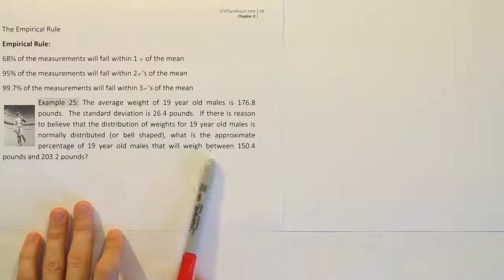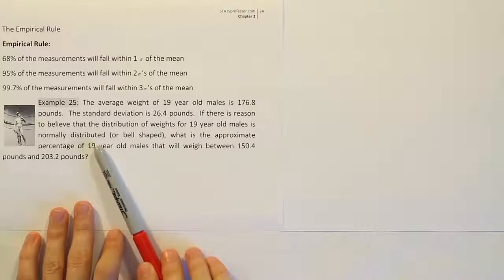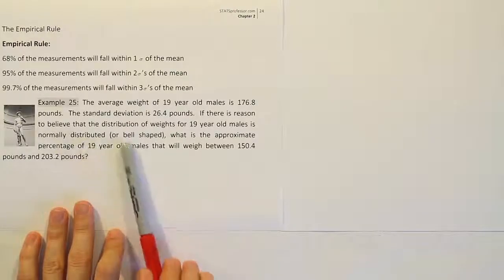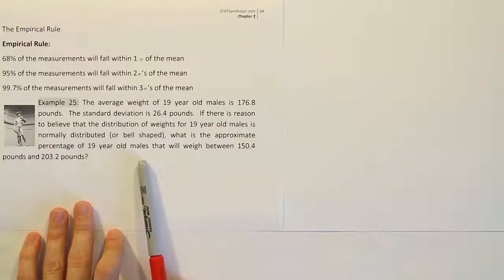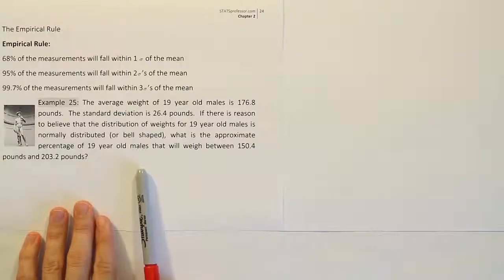For the empirical rule, they have to tell you bell-shaped, so they can't get around saying normally distributed, or saying this phrase bell-shaped, or perhaps saying symmetric and mound-shaped. But they have to say something that indicates you're dealing with a bell curve type distribution. All right, so because they have those key phrases, we know it's empirical rule.